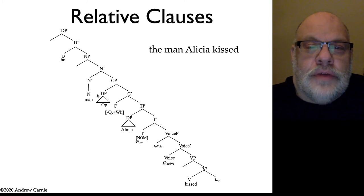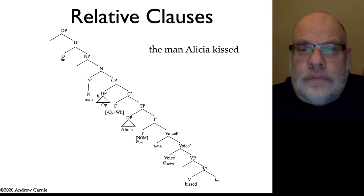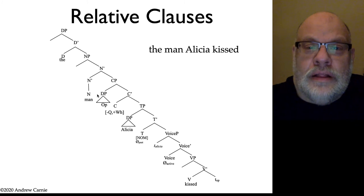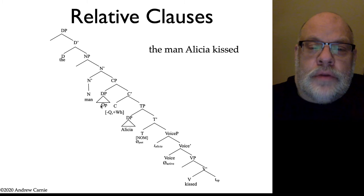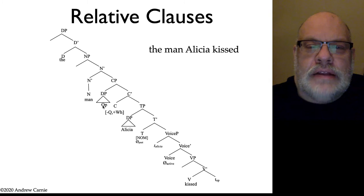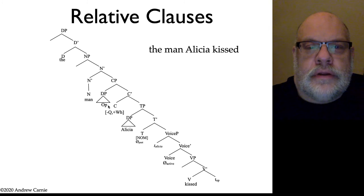So what do linguists do when there's something that should be there that isn't? We propose a null element. And the null element we're going to propose here is called an operator. An operator is effectively a null WH phrase.